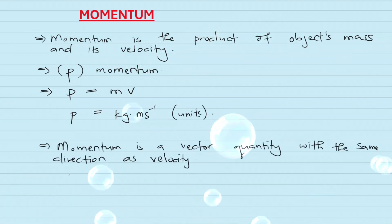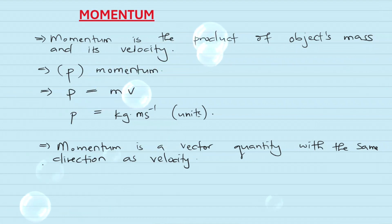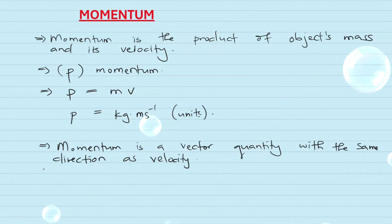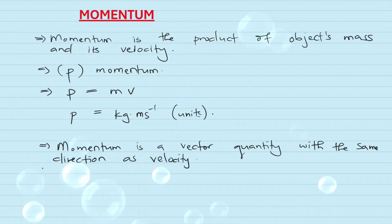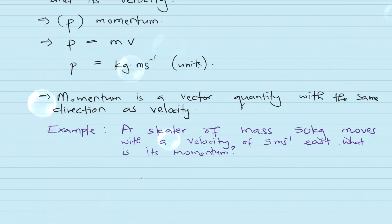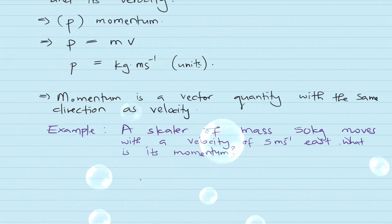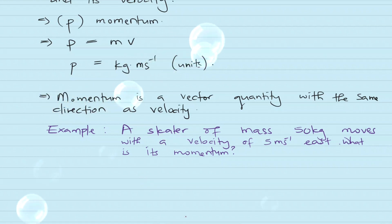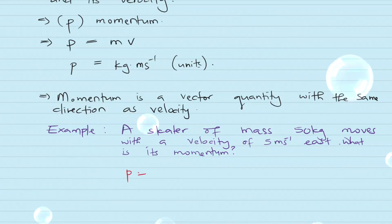Momentum is a vector quantity with the same direction as velocity. This means momentum acts in the same direction as velocity. If the object moves at 5 meters per second east, the direction of momentum will also be east. Example: a skater of mass 50 kg moves with a velocity of 5 meters per second east. What is its momentum?